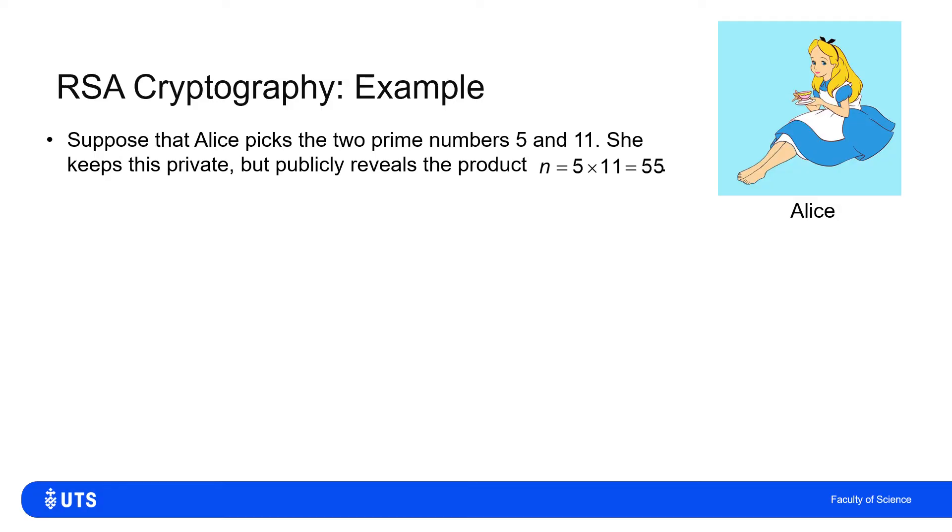But the same argument would hold if this was a hundred digit, a 500 digit product of two primes. One person would know the two primes, multiply them together and make that large prime publicly known.